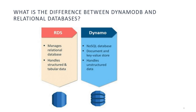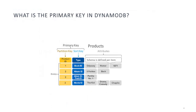DynamoDB also provides faster read and write performance compared to relational databases. What is the primary key in DynamoDB? The primary key is a unique identifier for each item in a DynamoDB table. There are two types of primary keys: partition key and composite key. The partition key is a single attribute used to partition data across multiple servers, while the composite key consists of both a partition key and a sort key.